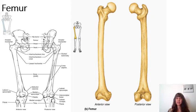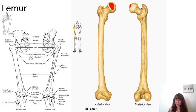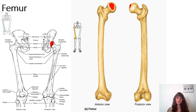Similar to the humerus, the femur has a femoral head, which is the rounded proximal aspect of this bone. Centrally located on the most proximal aspect of the head is a tiny pit or depression referred to as the fovea capitis. The fovea capitis serves as a ligamentous site of attachment between the head of the femur and the acetabulum of the coxal bone, forming that ball and socket joint.